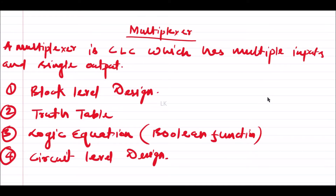In the previous session we discussed what a multiplexer is and how to design a 2x1 multiplexer and a 4x1 multiplexer — covering block-level design, truth table, logic equations, and circuit-level design. In this session we will see how to design a 4x1 multiplexer using 2x1 multiplexers.